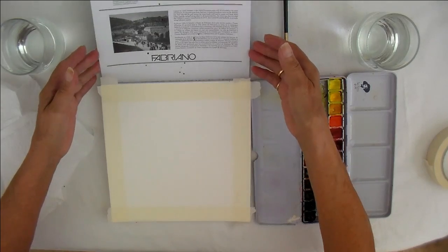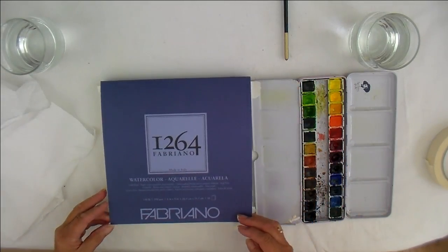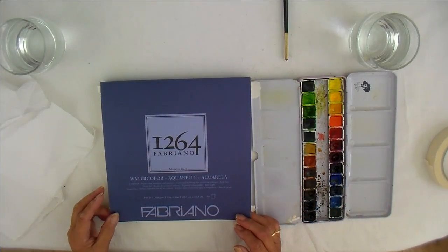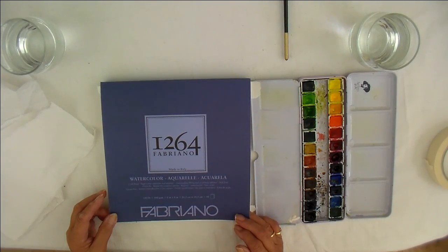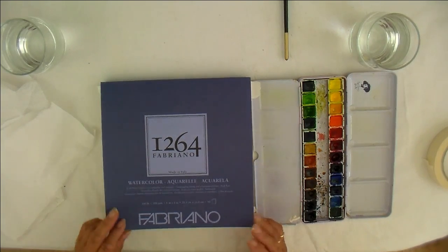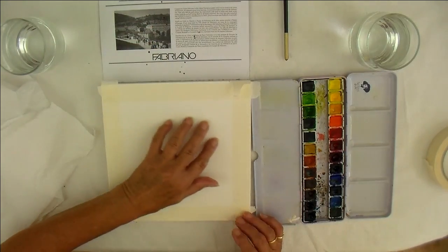To start off with, I'm using Fabriano 140lb, 300g, 1264 Fabriano watercolor, and it's a rough cold press. So it's got a texture to it.